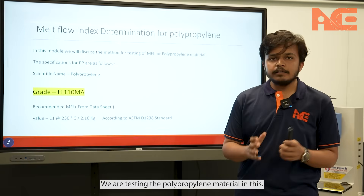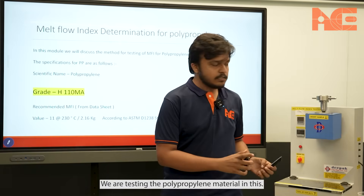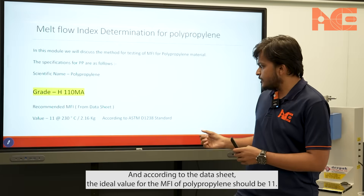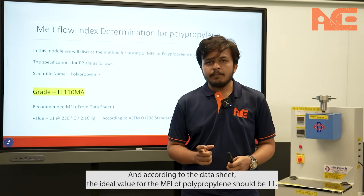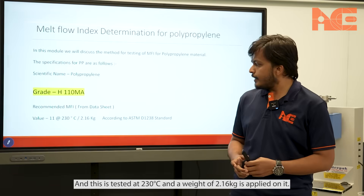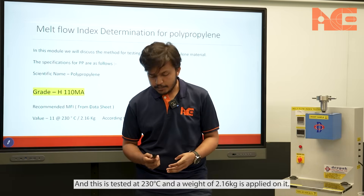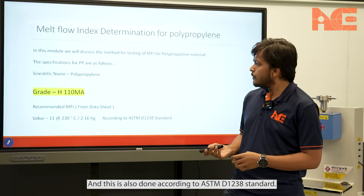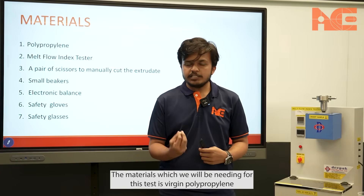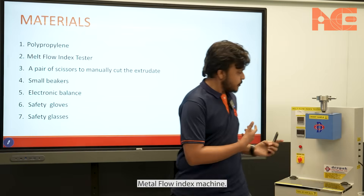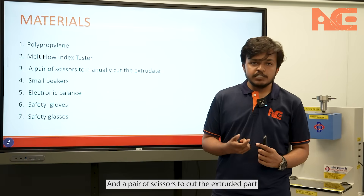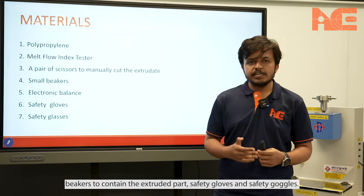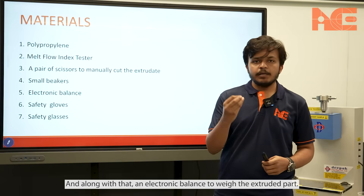We are testing the polypropylene material. The grade provided in the data sheet is H110MA, and according to the data sheet, the ideal MFI value for polypropylene should be 11, tested at 230 degrees Celsius with a weight of 2.16 kg applied, per the ASTM D1238 standard. The materials needed for this test are virgin polypropylene, an MFI machine, a pair of scissors to cut the extruded part, beakers to contain the extruded part, safety gloves, safety goggles, and an electronic balance to weigh the extruded part.